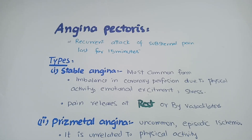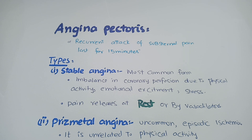Angina pectoris is characterized by substernal or precordial pain lasting less than 15 minutes. It is classified into three categories. Stable angina is the most common form, caused by atheromatous plaque, resulting in ischemia and severe chest pain lasting less than 15 minutes. This pain is relieved by rest and vasodilators.